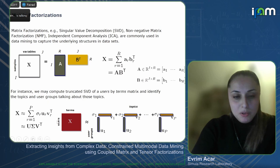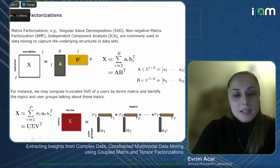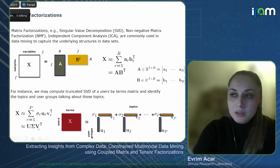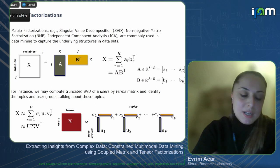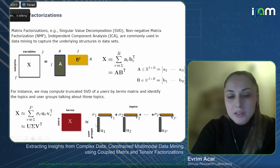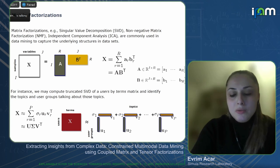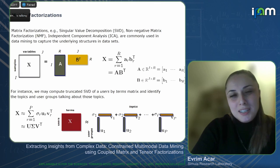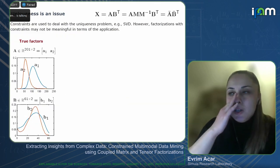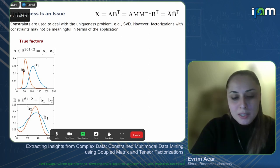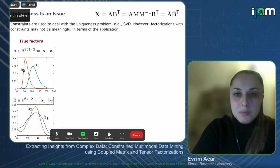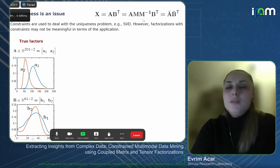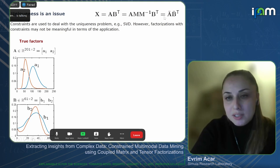Taking the user by term matrix example, we can find its best rank-P approximation using SVD, factorizing X as U times Sigma times V transpose, where U and V have orthonormal columns corresponding to left and right singular vectors and Sigma is a diagonal matrix with singular values on the diagonal. We can use these singular vectors to find user groups and topics. Matrix factorizations are not unique, so we need constraints like orthogonality in SVD to get underlying patterns uniquely. Otherwise, if X equals A times B transpose, we can multiply A by any non-singular matrix M and multiply B by the transpose of M-inverse to get a different but equally good factorization.